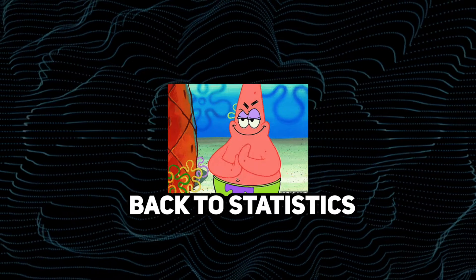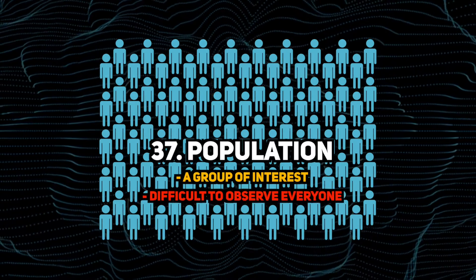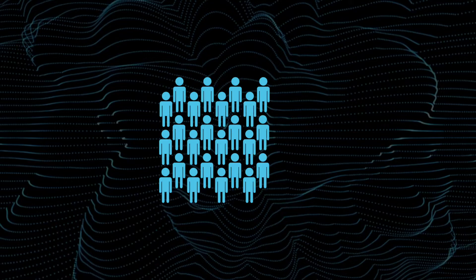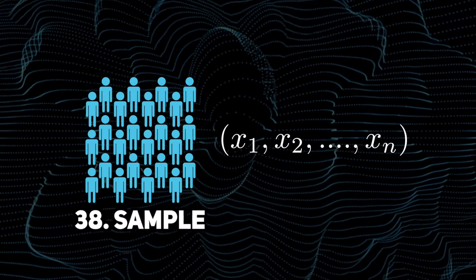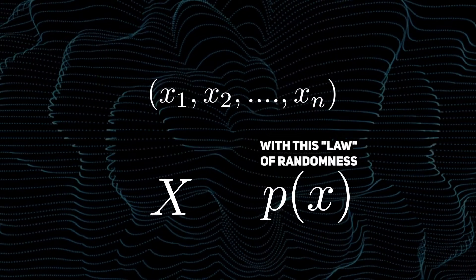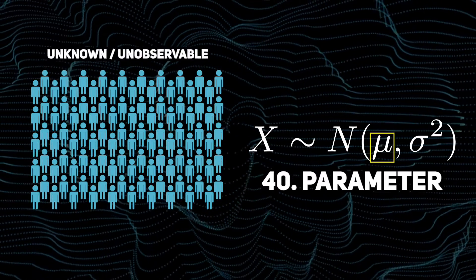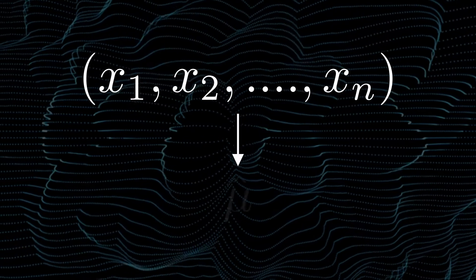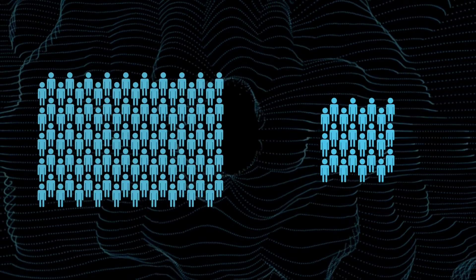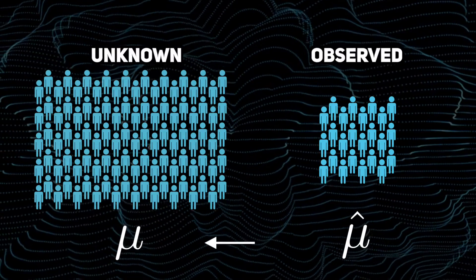Now we'll use these probability tools to our advantage. Statisticians start by defining a population — a group that we're interested in but often don't have the resources to fully observe. Instead, we're forced to collect data from a small subset, which we call a sample. Next, we assume that the data was generated by a probability distribution or mathematical formula. This assumption is our statistical model. Statisticians translate an aspect of this population into a parameter within this model. Because the population is unobservable, this parameter is also unknown. Our goal is to use the data to construct a guess for the parameter, which we call an estimator.